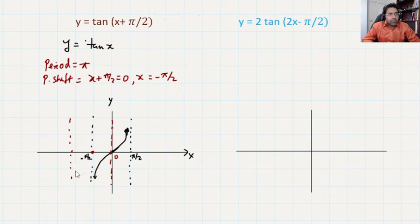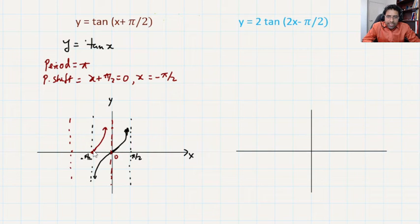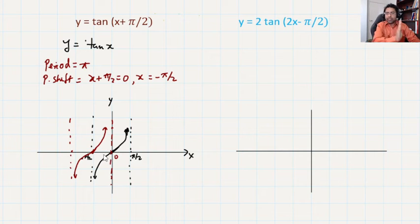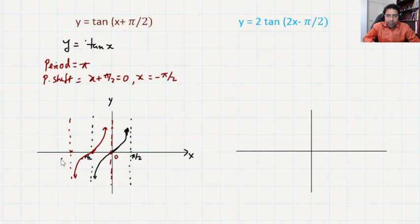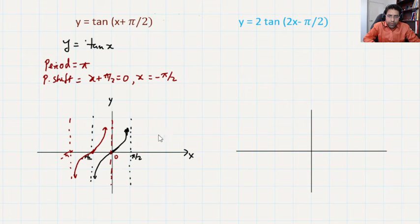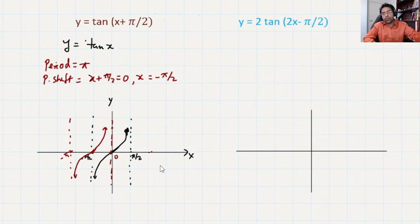The graph is starting from there and going up like that, following the same trend, then coming down and going undefined as it comes close to the asymptotes. So it is basically just shifting left, but the period is the same. From -π to 0 the distance is π, which is the period. You can just copy that graph but make sure the period is always π.